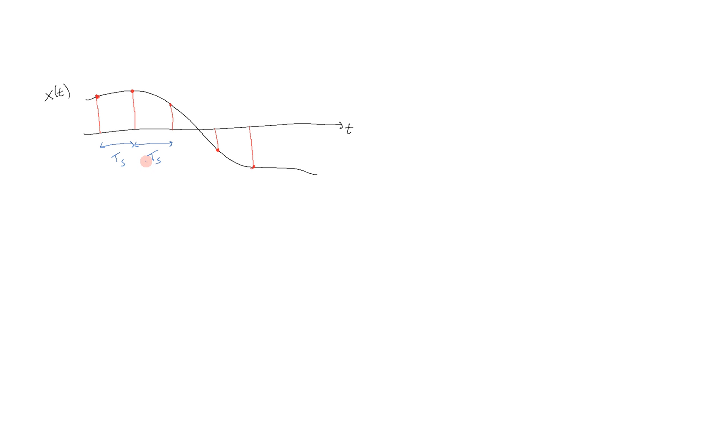And if we want to know what the actual values of these are, all we have to do is plug in these times into our function for x. So for example, let's say that this is at time 0, this is going to be x of 0. That's what the value of this point is.